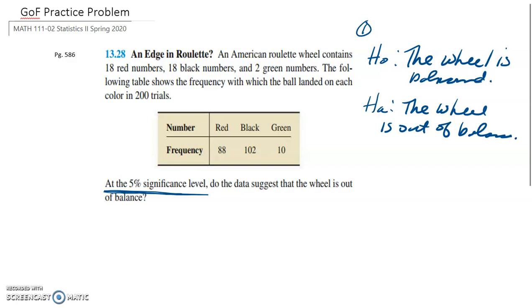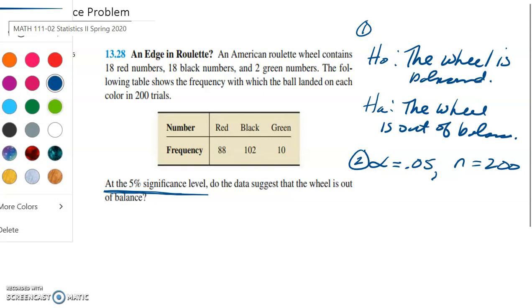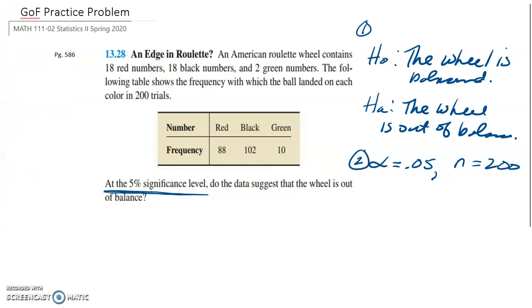So let's start by trying to figure out what these expected and observed values are. For this particular problem, just to get some ideas down, we are going to run it at the 5% significance level. There were 200 trials and n is 200. So we'll leave that information up there. Now, when we do any of these goodness of fit, it's always good to start kind of a table. And what we're going to look at are the three different colors. We have red, black, and green.